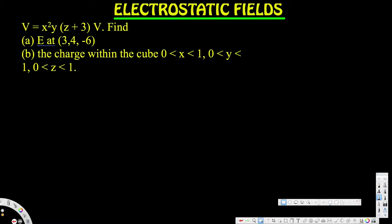Let's look at this problem. The question gives V = x²y(z + 3) and asks us to find the electric field at point (3, 4, -6). The second part asks for the charge within the cube from x = 0 to 1, y = 0 to 1, z = 0 to 1.